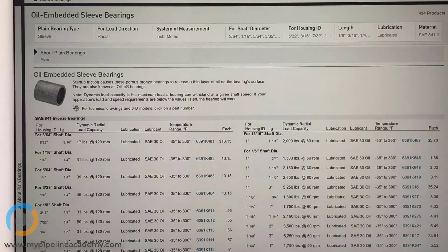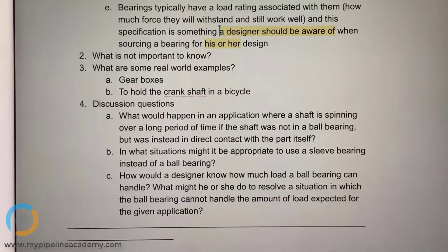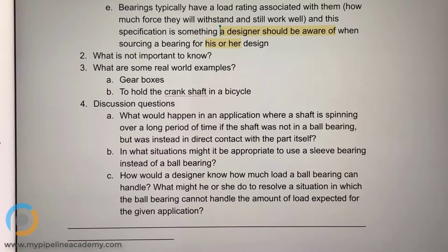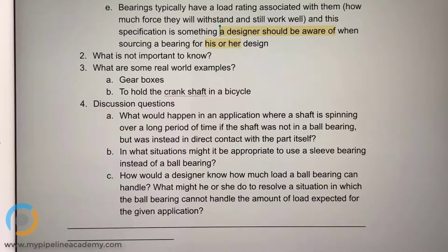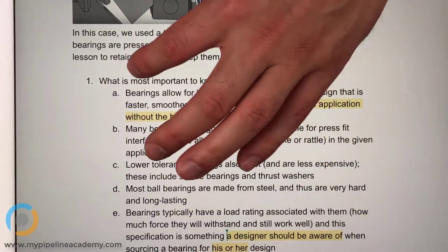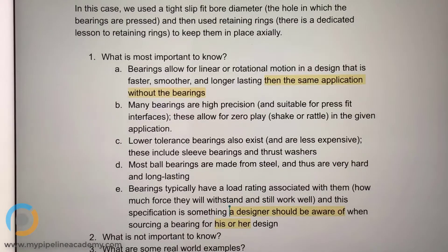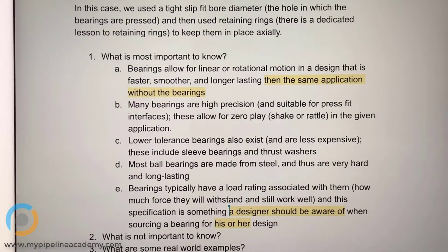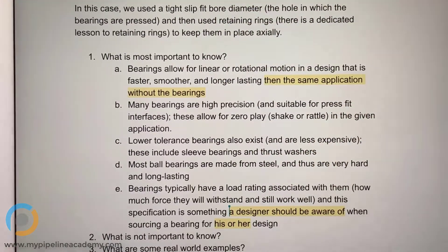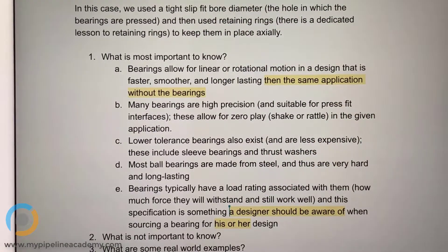I do have a question here, point number one, point E. Do you think that you can read this one out loud, please? Bearings typically have a load rating associated with them, how much force they will withstand and still work well, and this specification is something a designer should be aware of when sourcing a bearing for his or her design. I highlighted when a designer should be aware of, and my question is how. How do we read and look for it?